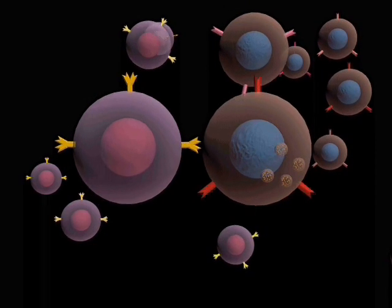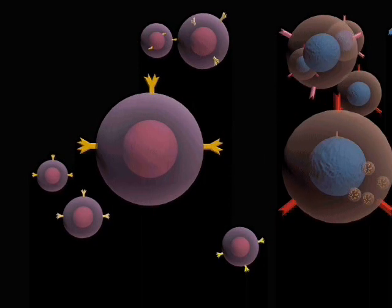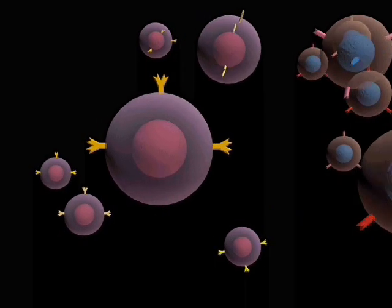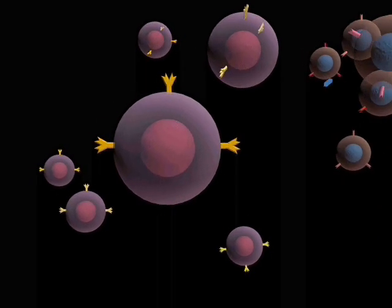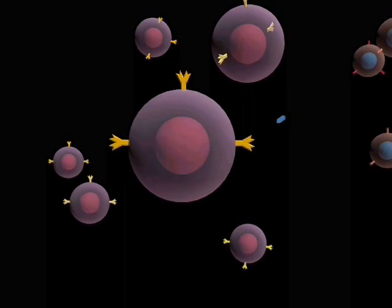In the presence of an antigen, only one of these many different B-cells is able to bind to that antigen successfully. This process, known as clonal selection, initiates a primary immune response which causes the cell to undergo a series of irreversible changes.